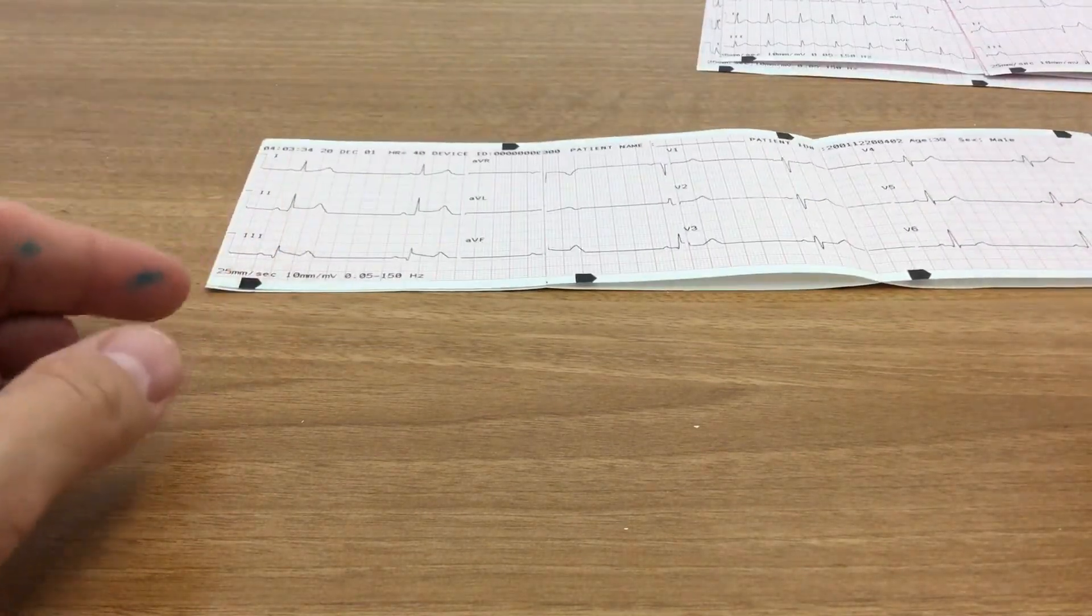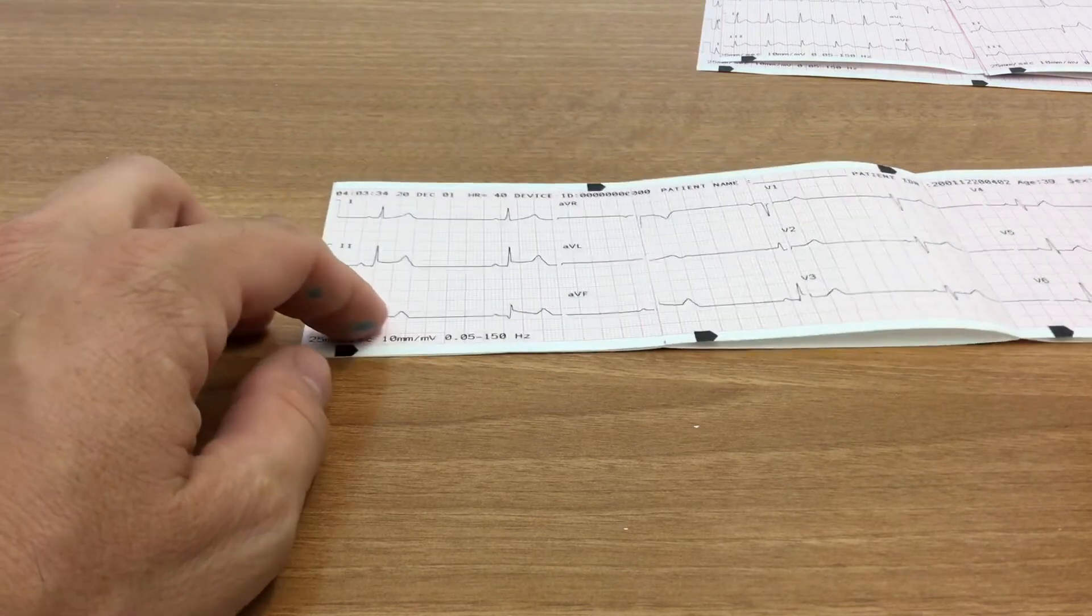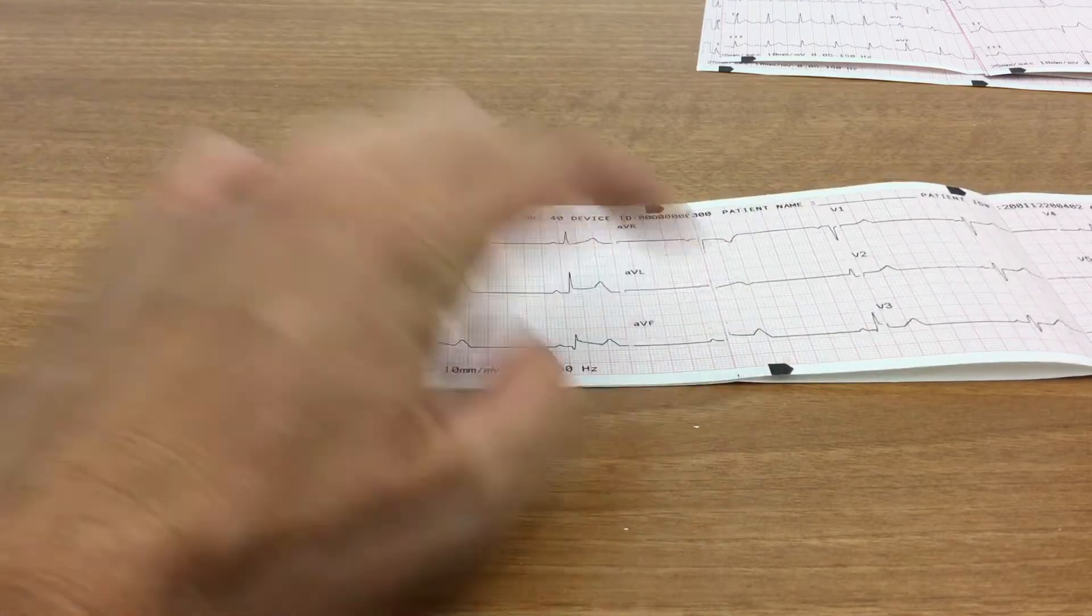And so again, what I like to do is I like to go through that ISAL method. So let's start with I, the inferior wall, 2, 3, and AVF.